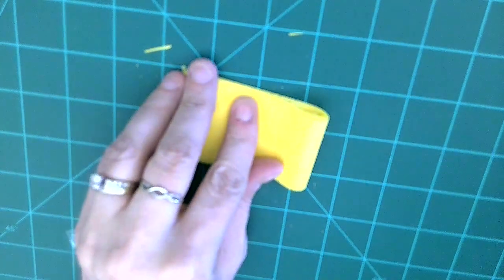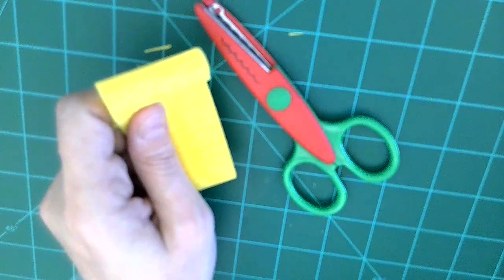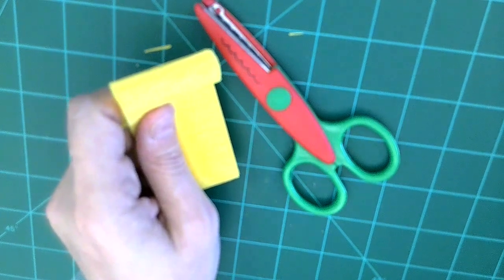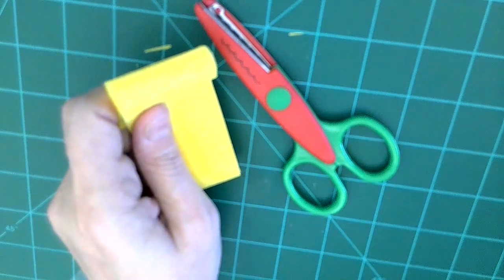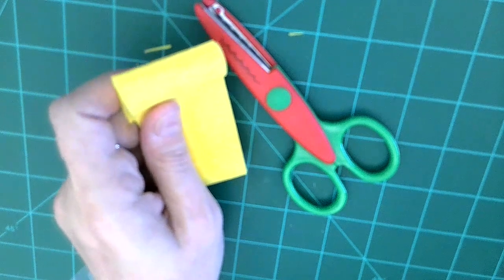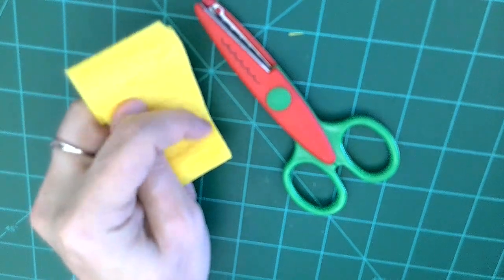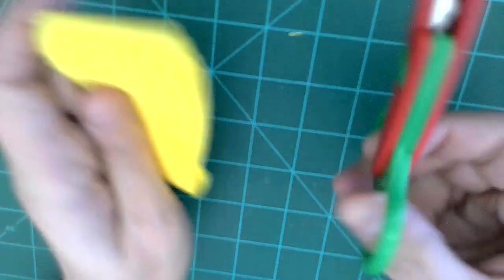Just like that and now is where we get to use our fun fancy scissors. So you'll want to cut the top of your crepe paper streamer with our fun fancy scissors and just make sure that you only do one edge, so in this case I'm going to do this edge right here that I'm pointing to.